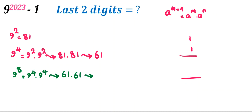Let's calculate this part, 61 times 61. It will be 3721, so 21.